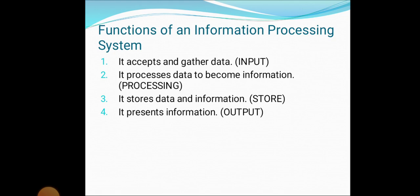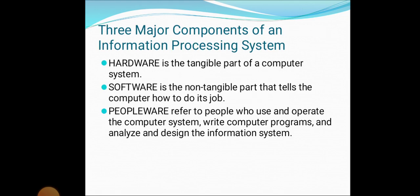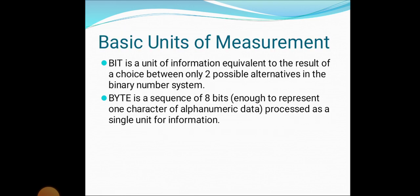There are three major components of the information processing system: hardware, software, and peopleware. Hardware is the tangible part of a computer system. Software tells the computer how to do its job. Peopleware refers to people who use and operate the computer system, write programs, and analyze and design the information system.